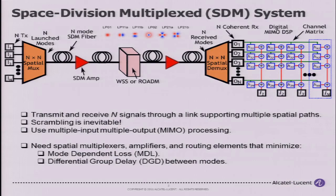For such a system to work, all components must have low mode-dependent loss. Mode-dependent loss effectively is like losing modes — if you have high mode-dependent loss, you've reduced your number of modes and reduced your capacity. Also, to make the equalizers easier to build in the MIMO DSP, you should minimize the group delay, because the group delay requires more memory in an equalizer.